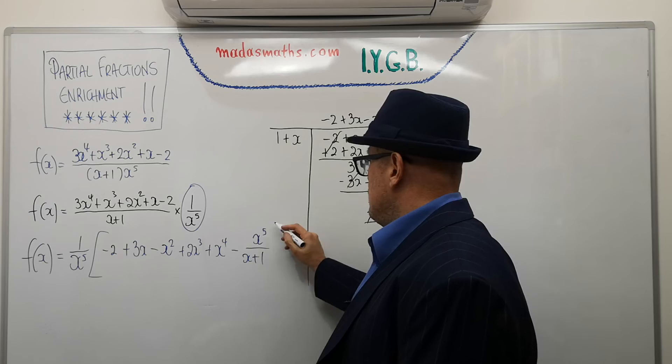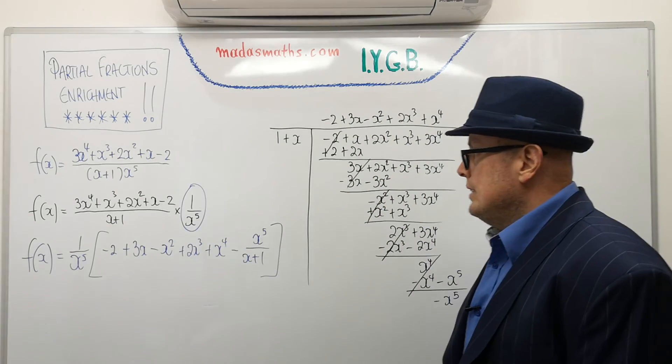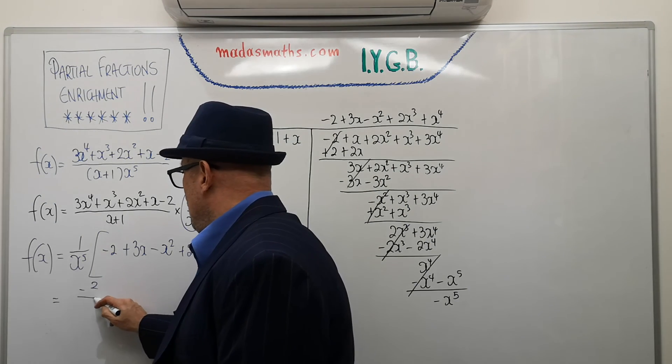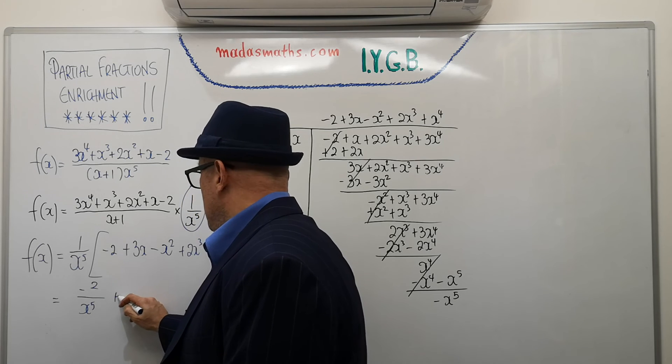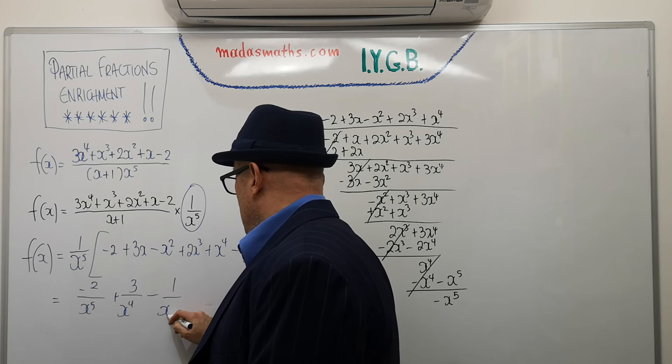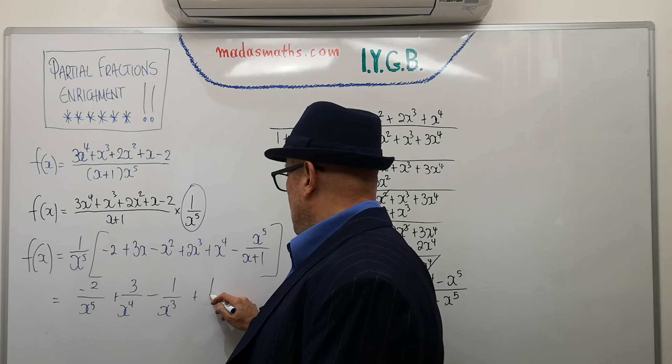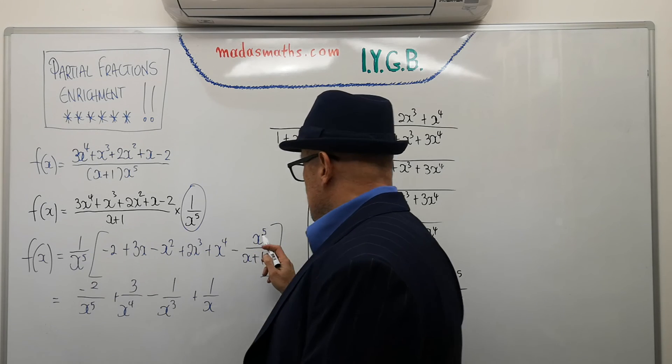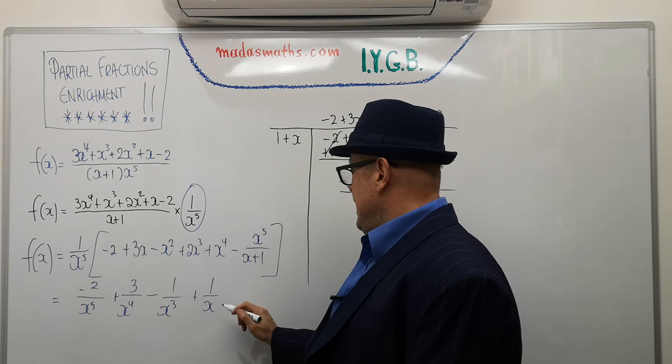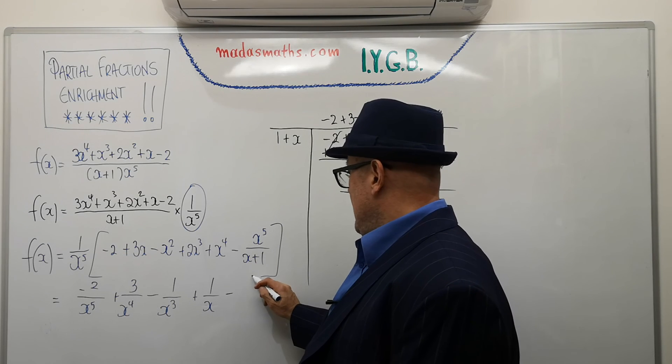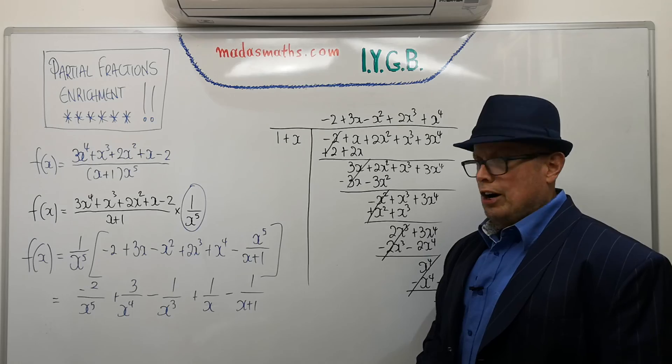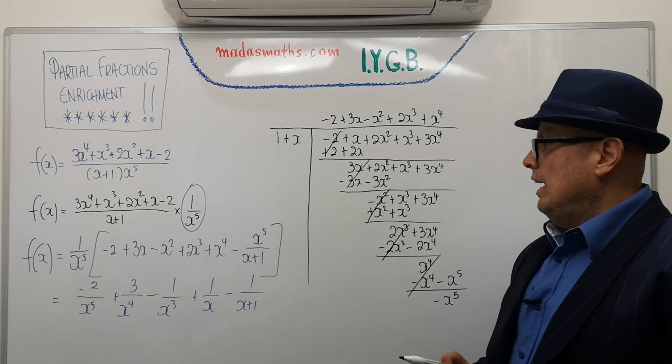And all that's left for me now is to multiply this bracket out. And, of course, when I do so, I'm going to get negative 2 over x to the 5 plus 3 over x to the 4 minus 1 over x cubed plus 1 over x. Lastly, that's where I stopped because I wanted to just cancel my last term because of the x to the 5 in there. And, of course, when I do the last item, it's going to be the 1 over x plus 1. And I managed to resolve my f of x into partial fractions quite clinically and quite effectively.